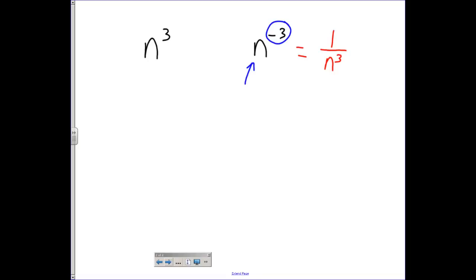I'll show you an example here with some numbers. Let's say I have 2 to the third power, and of course 2 to the third power is equal to 8. But then I have 2 to the negative third power. Well that's equal to 1 over 2 to the positive third power, which is equal to 1 over 8.